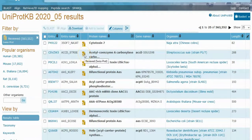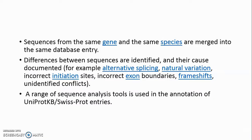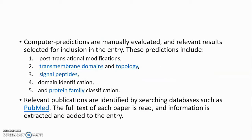The manual annotation of an entry involves detailed analysis of the protein sequence and of the scientific literature. Sequences from the same gene and the same species are merged into the same database entry. Differences between sequences are identified and their cause documented — for example, alternative splicing, natural variation, incorrect initiation sites, incorrect exon boundaries, frameshifts, and unidentified conflicts. A range of sequence analysis tools is used, including computer predictions manually evaluated for post-translational modifications, transmembrane domains, signal peptides, domain identification, and protein family classification. Relevant publications are identified by searching databases such as PubMed.